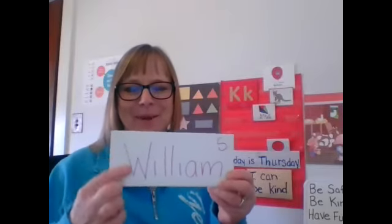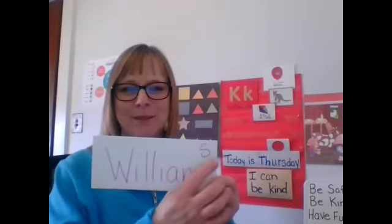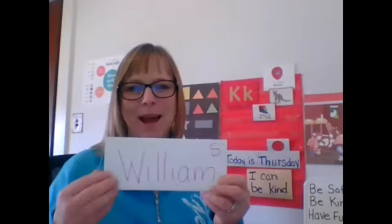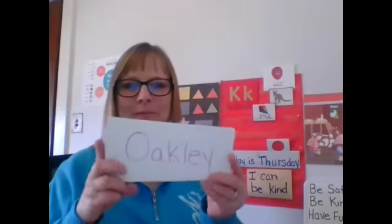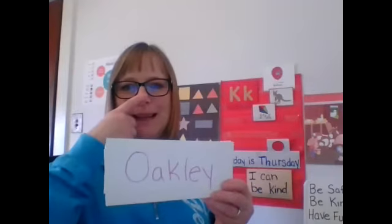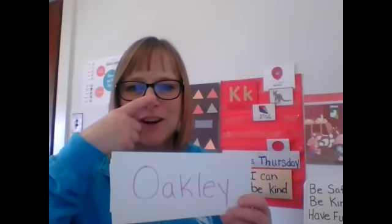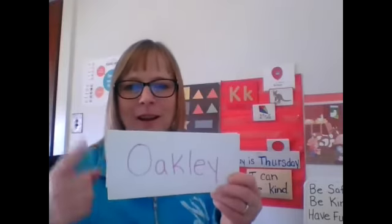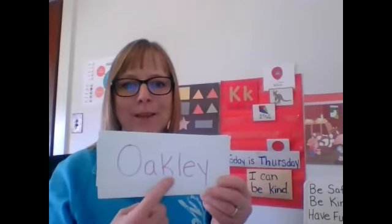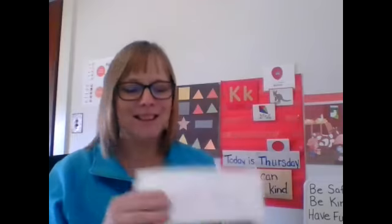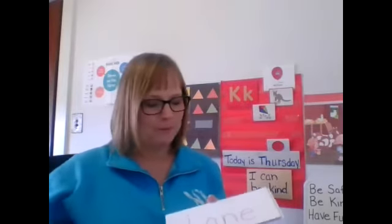Whose name is this? William. William starts with the letter W. This is William S's name. Oakley — look, I have a finger on my nose. Do you have your finger on your nose? Oakley starts with the letter O, but what's right in the middle? The lowercase K — Oakley.